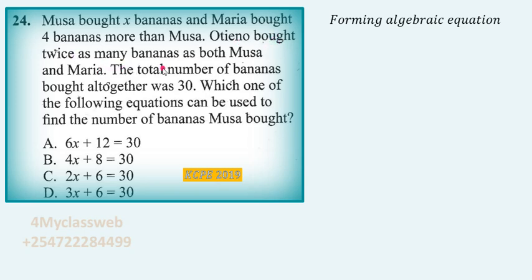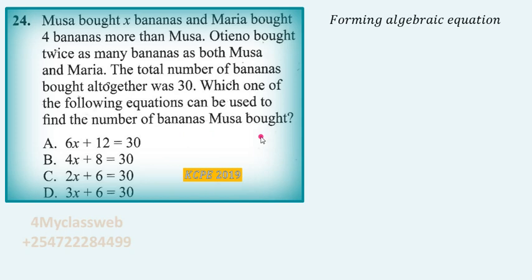For Oteno, his amount is also expressed in terms of what Musa and Maria bought. We are told that Oteno bought twice as many bananas as both Musa and Maria — in other words, what Musa bought plus what Maria bought, you add the two, then multiply by two to get what Oteno bought. The total number of bananas bought by all three people was 30, and finally the question asks which equation can be used to find the number of bananas Musa bought.